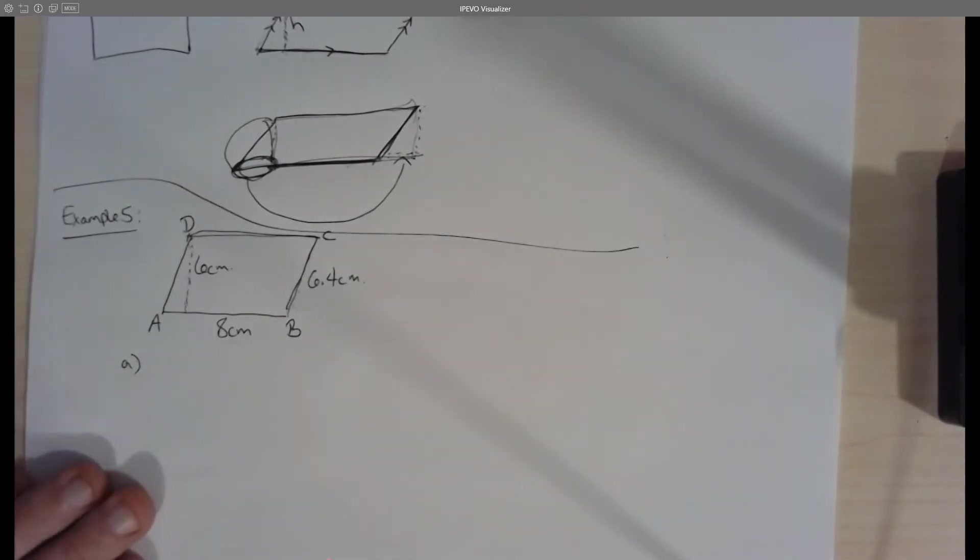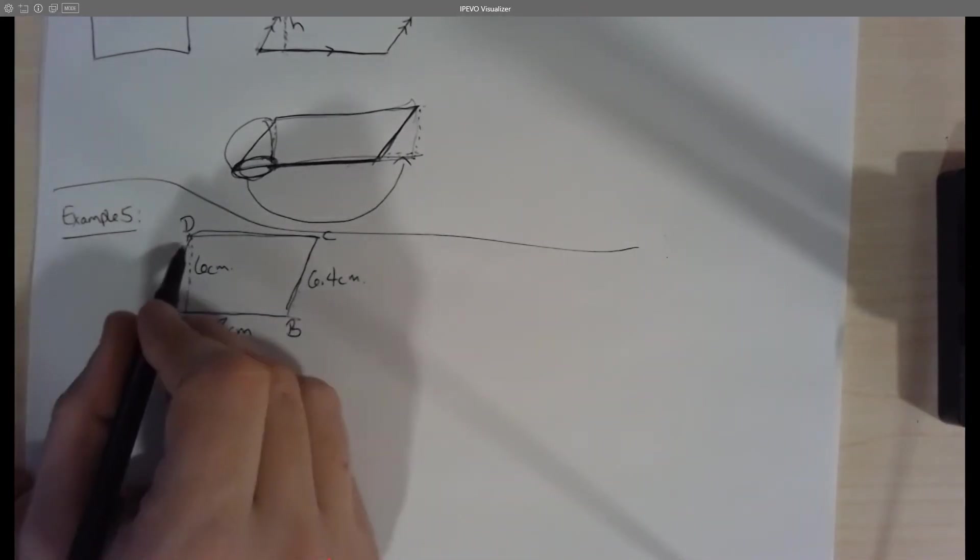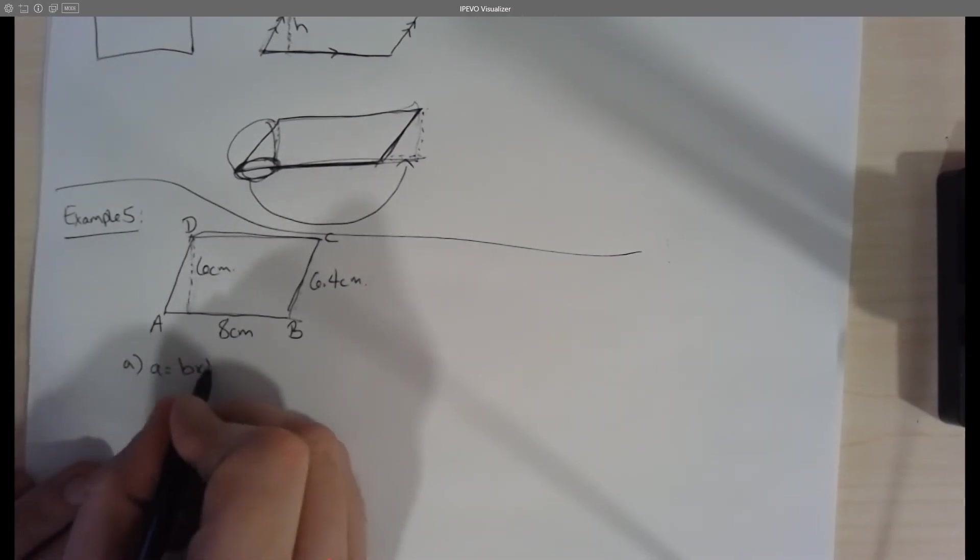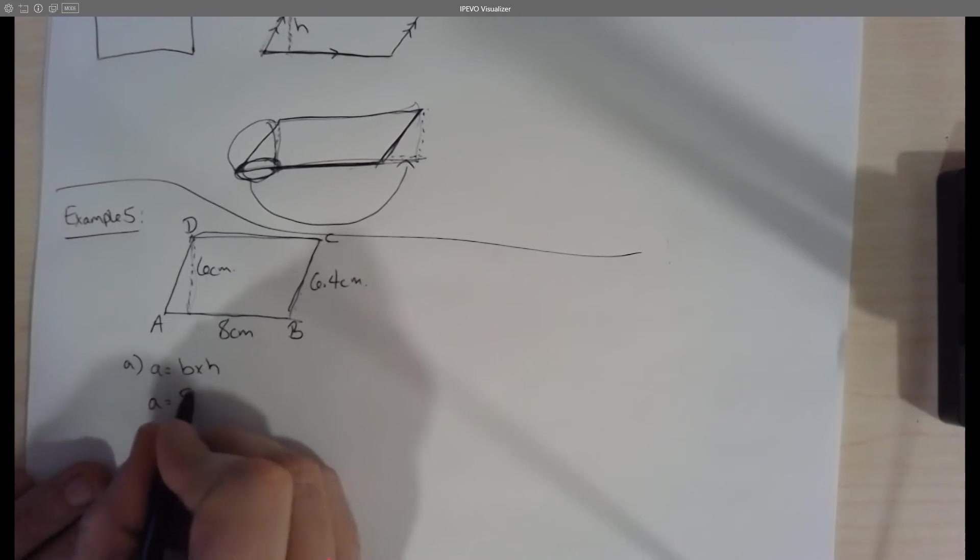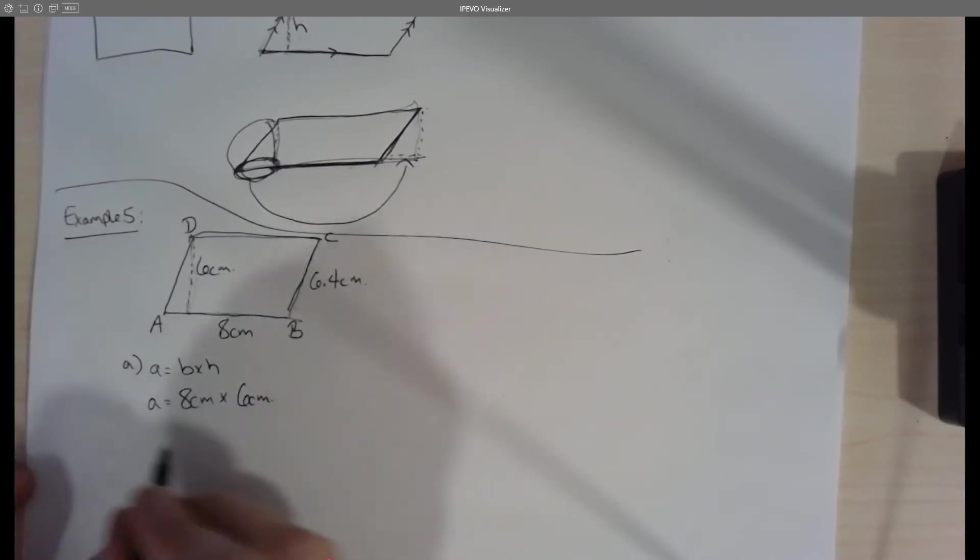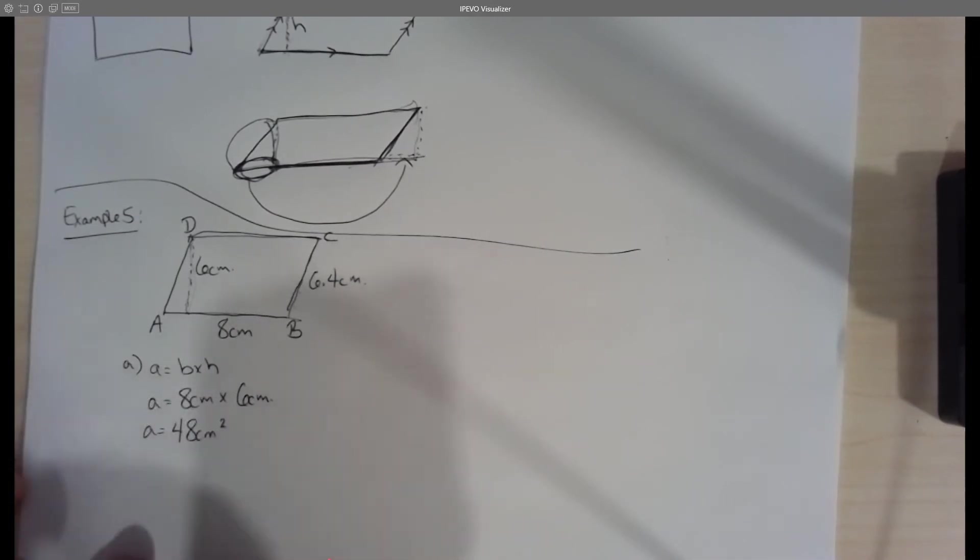It first of all asks us in part A to find the area of the parallelogram. So the area of the parallelogram is going to be base times vertical height here. So area equals base times height or 8 centimeters times 6 centimeters, which is going to give us an area of 48 centimeters squared.